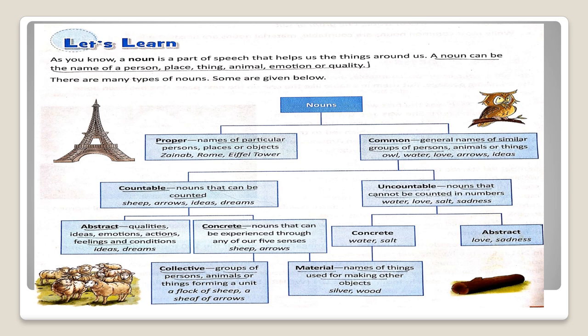Concrete noun. Nouns that can be experienced through any of our five senses. Like Sheep, Arrows.